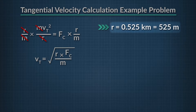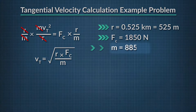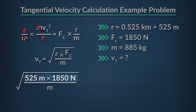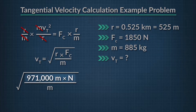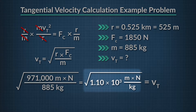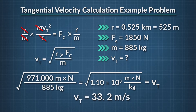Our radius is 0.525 kilometers, the centripetal force is 1,850 newtons, and the mass is 885 kilograms, with tangential velocity as our unknown. When we multiply 525 meters — converting the radius to meters — times 1,850 newtons, we get 971,000 meter-newtons. Dividing by the mass, 885 kilograms, we get the square root of 1.10 times 10 to the third. The square root of that is 33.2 meters per second. So the car is traveling at a tangential velocity of 33.2 meters per second around the track.